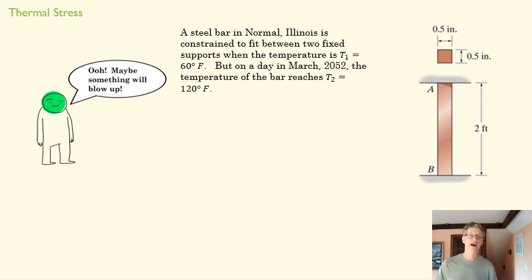Here we are, we've got a steel bar in Normal, Illinois that is constrained to fit between two fixed supports when the temperature is 60 degrees Fahrenheit. But in 30 years when we live in an apocalyptic wasteland and the temperature reaches 120 degrees, what's going to happen to that bar? It's not going to matter because of the apocalyptic wasteland, but let's not get too dark about that.